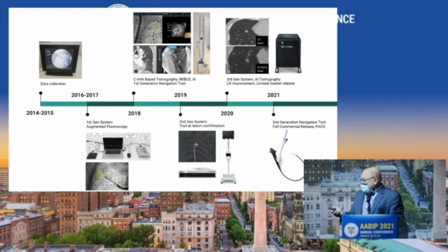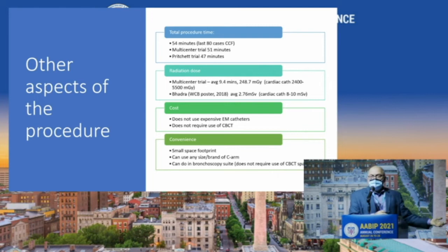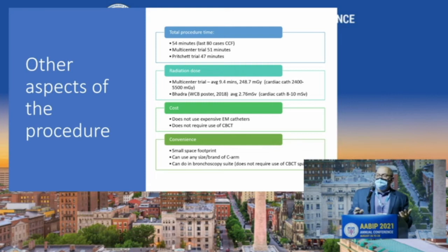Time is money, as Jasper Singh said this morning. You don't want a new technology that takes two and a half hours when something else takes 30 minutes. In our last 80 cases at the Cleveland Clinic, total procedure time was about 54 minutes from scope in to biopsy, including several rounds of ROSE. The multicenter trial averaged 41 minutes, and Mike using cone beam averaged 47 minutes — so it's all around 50 to 55 minutes, and the more you do the better you get.